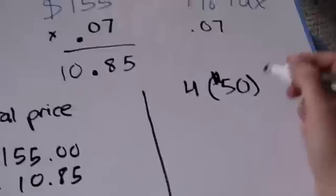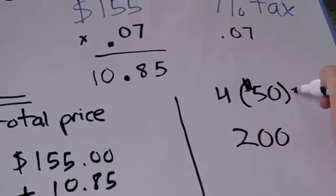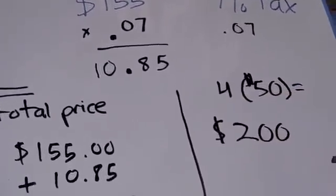In our problem, we know that Mrs. Berg paid with four $50 bills. 4 times 50 is equal to $200.